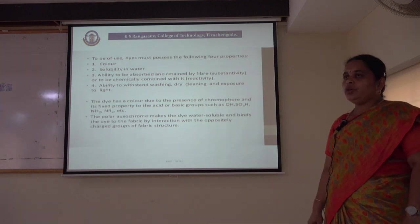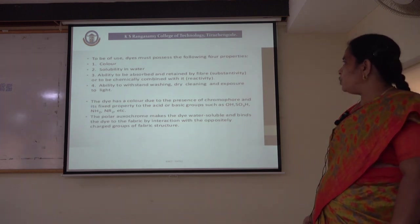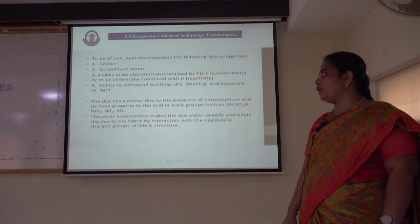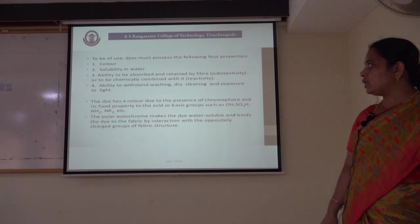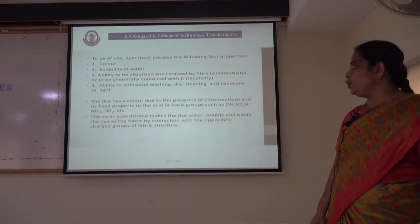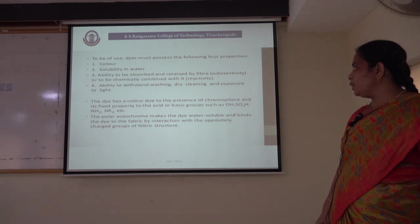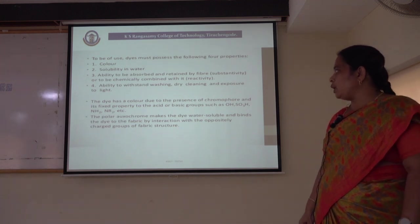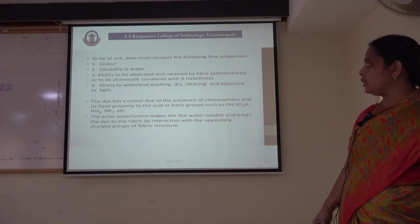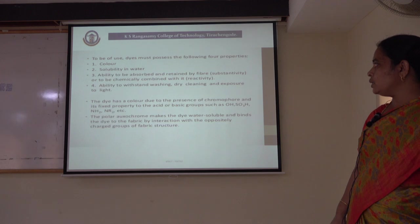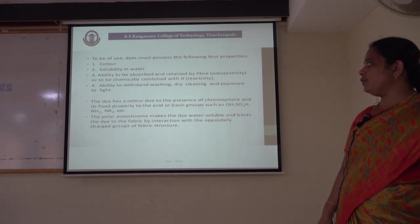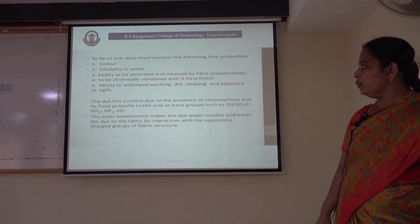The compound to be used as a dye must possess the following four properties. It should have a basic color or standard color, it should be soluble in water, it should have the ability to be absorbed and retained by the fiber or to be chemically combined with it, and the ability to withstand washing, dry cleaning and exposure to light — that is the fastness property of a dyestuff.